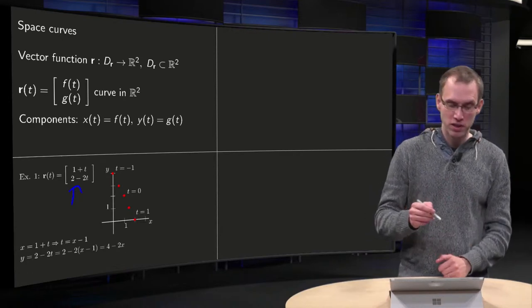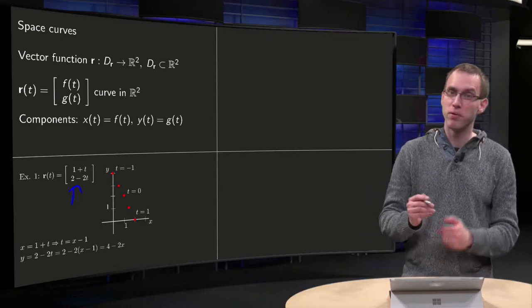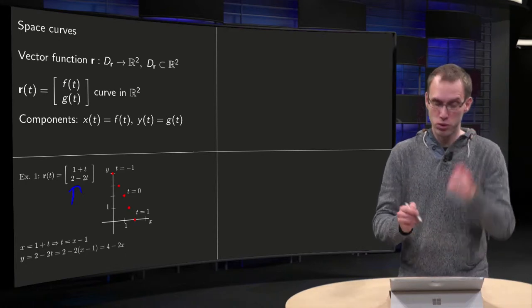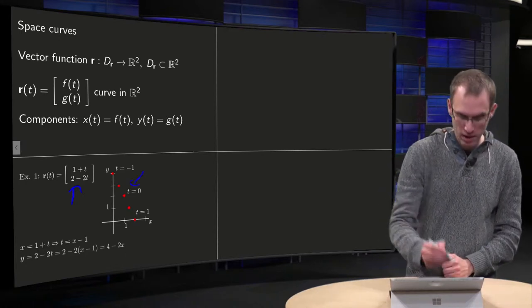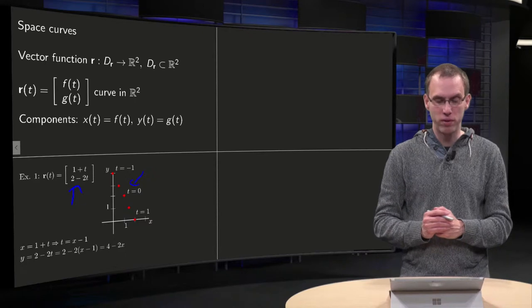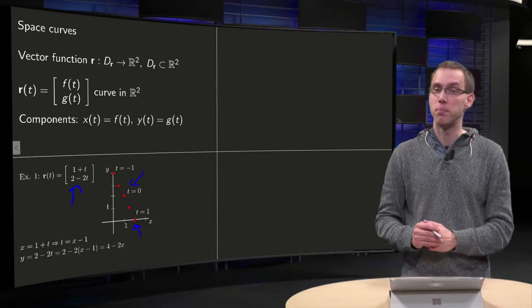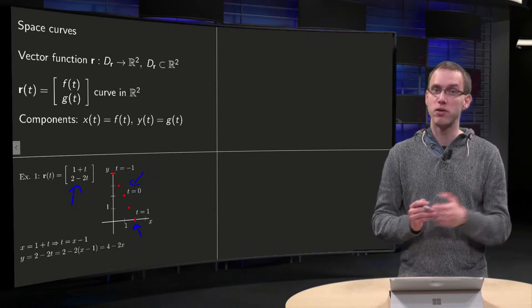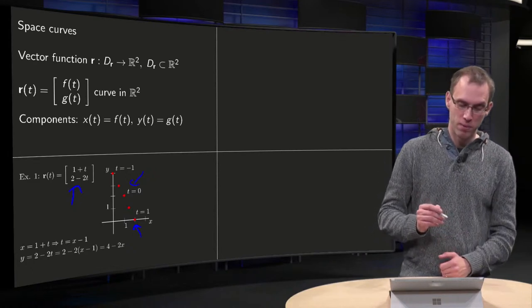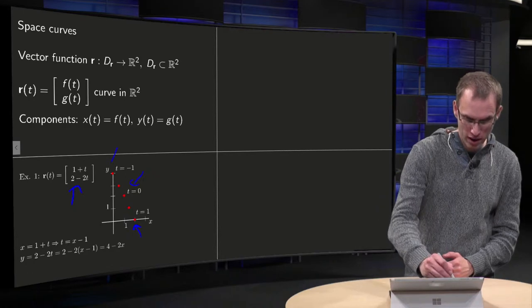Well let's plug in a few values of T. For T equals 0 for example we get the vector 1, 2, which is over there. And for T equals 1 we get 2, 0, so that is the vector over here, depicted by a red dot. For T equals minus 1 we get 0 and then 4, so we are over there.